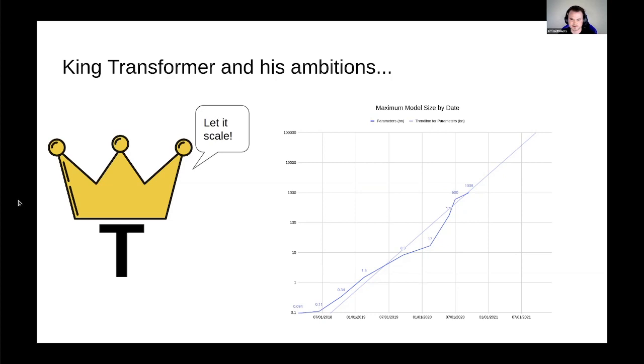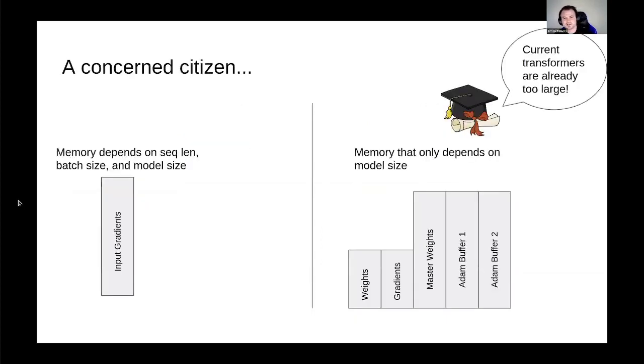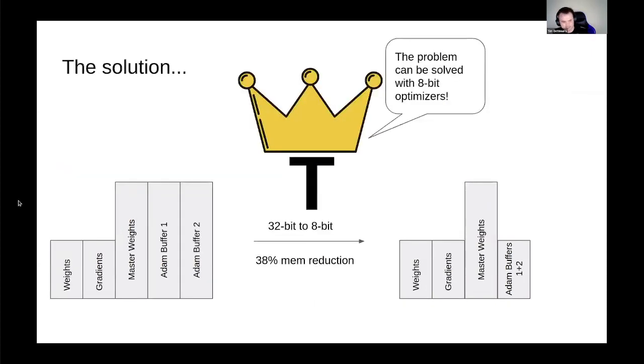A concerned citizen raised his voice. But my king, current transformers are already so large. I tried to fine-tune T5 on the higher cluster on 8 GPUs, and it was not enough. I didn't have enough memory. It still blew up. How are we going to fine-tune even larger models? And the king replied, steady there. I have a solution. 50% of the memory footprint of our transformers is allocated to the optimizer states, the Adam-1 and Adam-2 buffer. If we reduce memory to 8 bits, we can save about 40% of memory. And so with this solution, he tasked the normal distribution and the GPU to come up with building 8-bit optimizers.